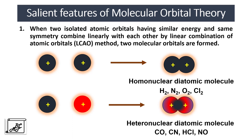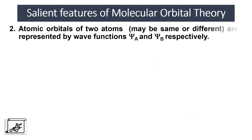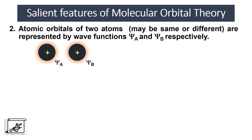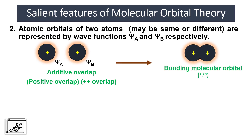When two atomic orbitals combine with each other, two molecular orbitals are formed. The next postulate states that atomic orbitals of two atoms may be same or different, forming homonuclear or heteronuclear diatomic molecules. They are represented by wave functions ψA and ψB, where A and B denote the atomic orbitals. When they combine with additive or positive overlap, it results in a bonding molecular orbital represented by ψb. This bonding molecular orbital has low energy and high stability.